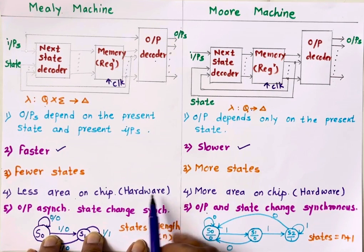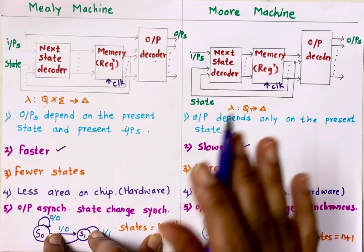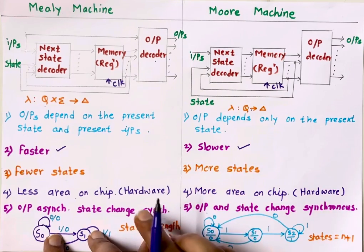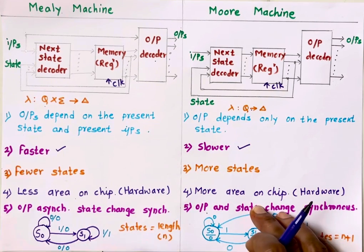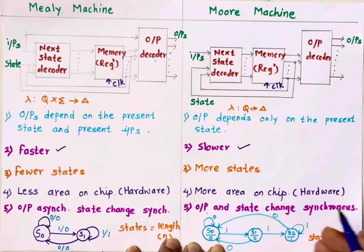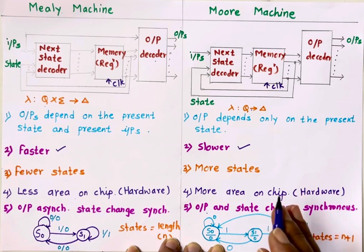When we need less hardware we apply less power, so power consumption is also less in a Mealy machine. In the case of a Moore machine, hardware is more complex, so it consumes more power.